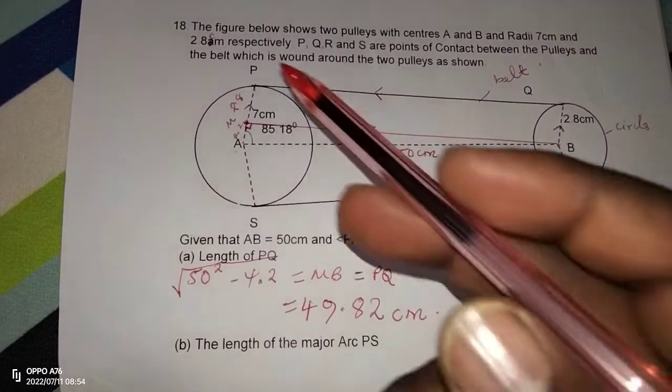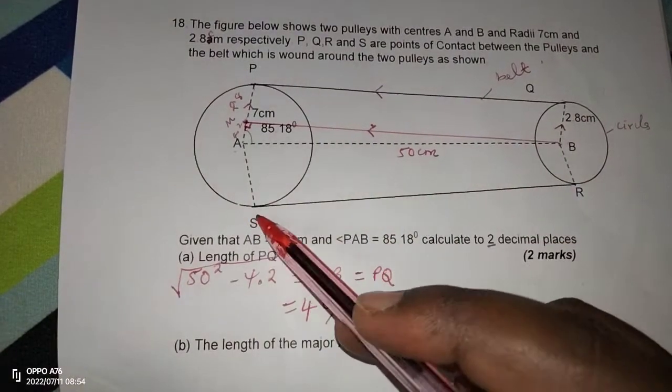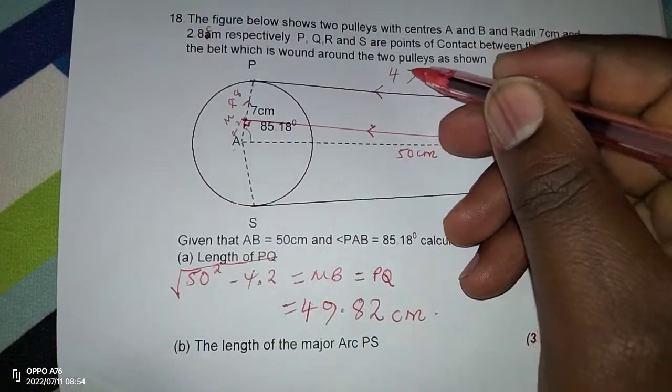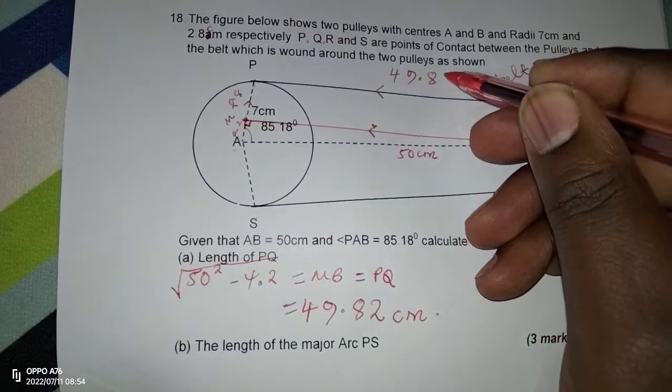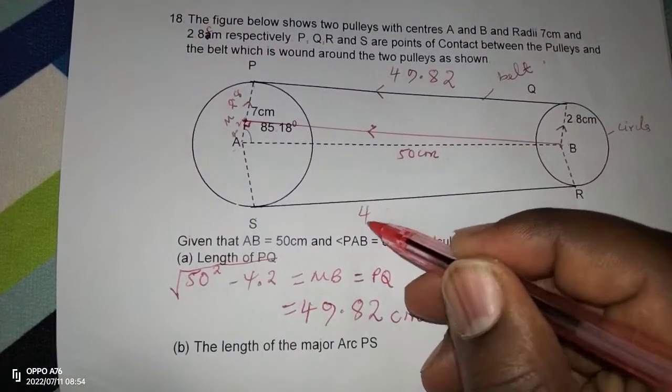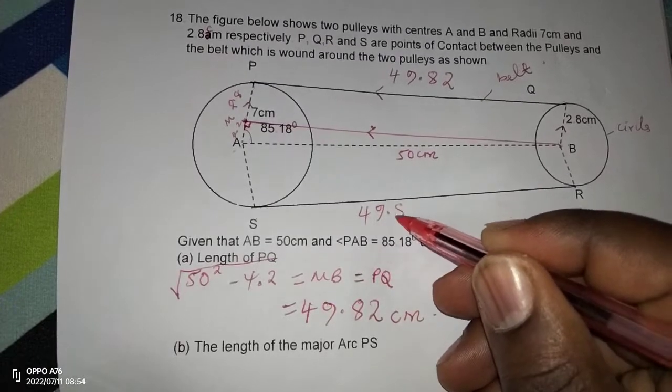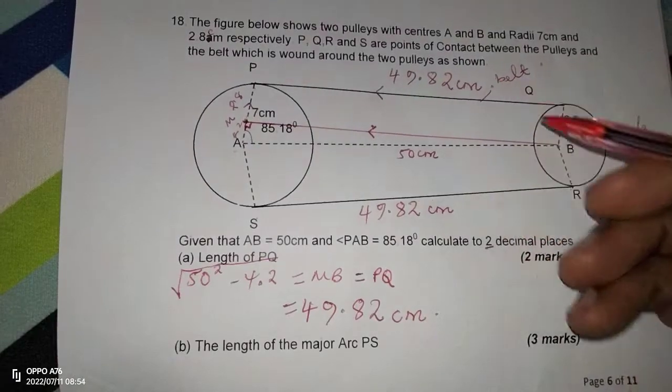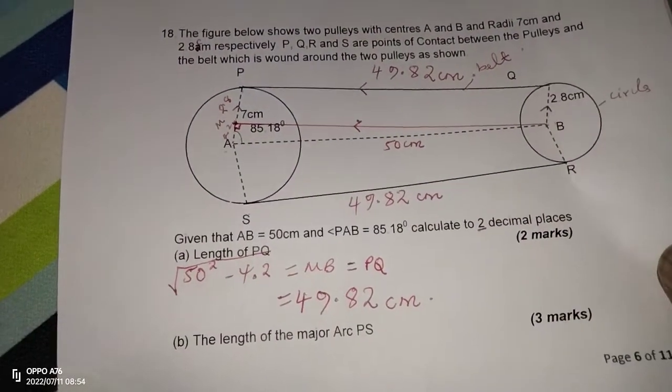It is very important to know that PQ is equal to SR on the other side. So we have 49.82 at this end, and 49.82 on the other side. These are centimeters.